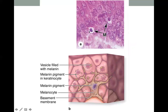Melanocytes have a nucleus and cytoplasm but are distinguished by their pale cytoplasm found at the stratum basale. Melanin pigment is produced by melanocytes and transferred to keratinocytes — the vesicles containing melanin are called melanosomes.